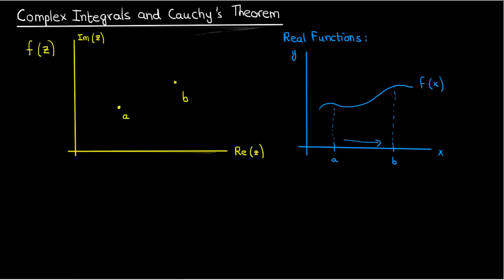For complex functions though, instead of having a straightforward path along an interval, you could go along multiple paths from a to b when performing your integration. Each of these paths could give you different results for the integral. So in that sense, complex integration is a lot like line integration in that a path has to be defined for the integration.